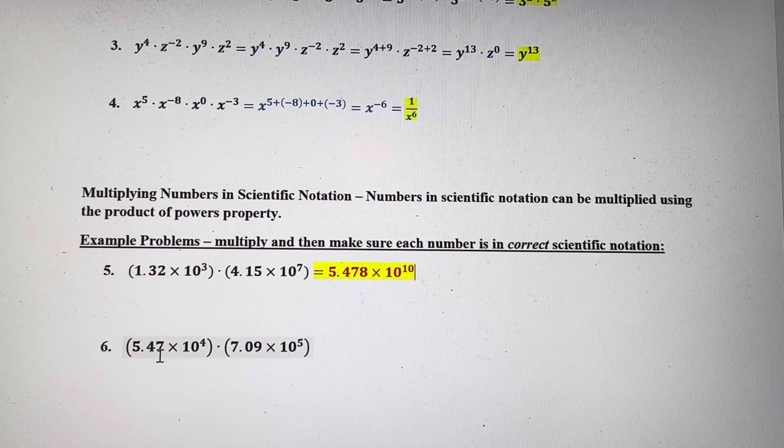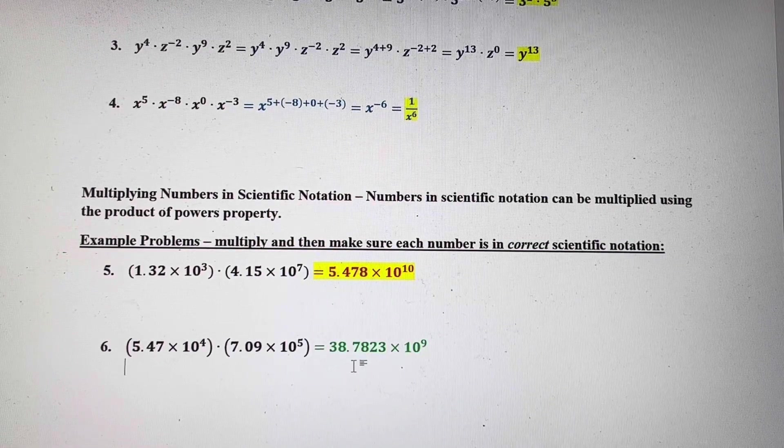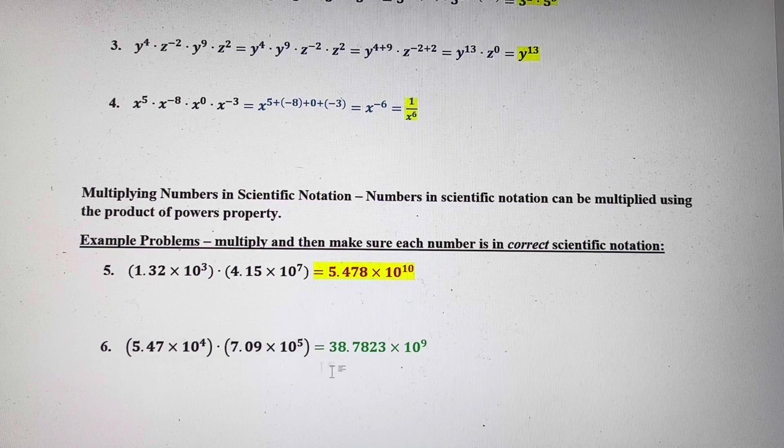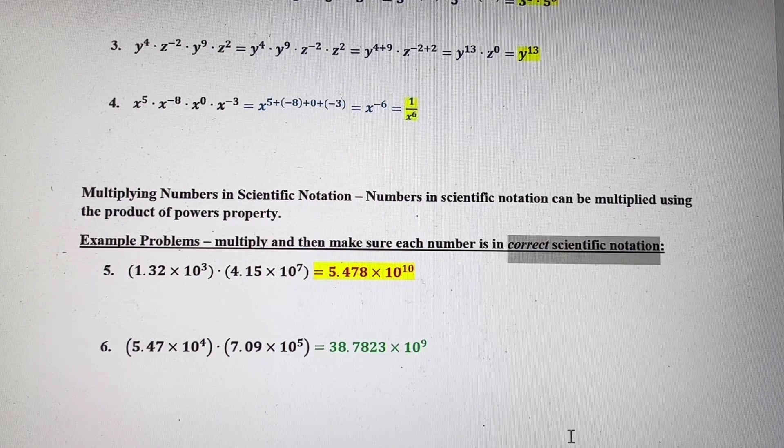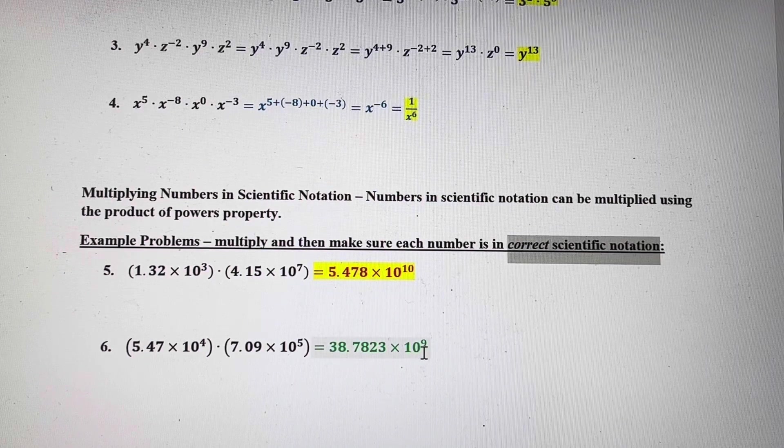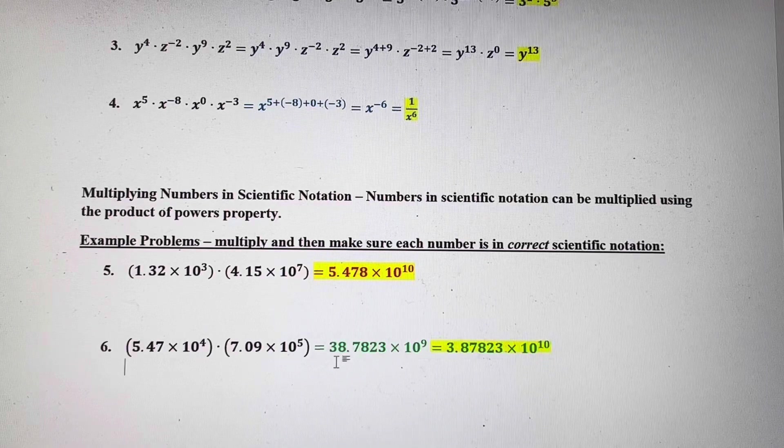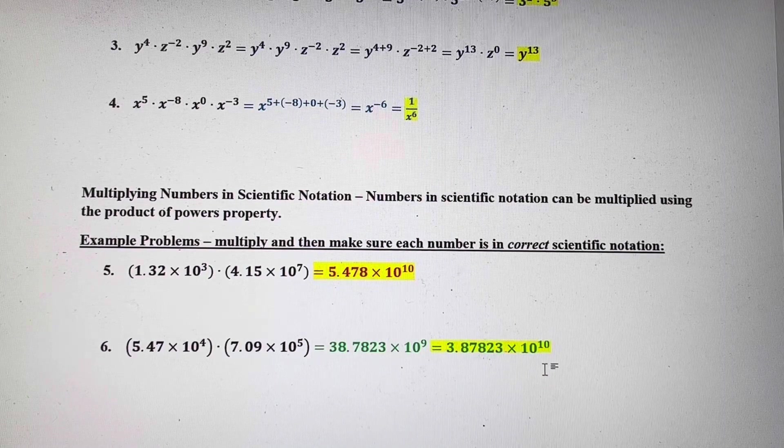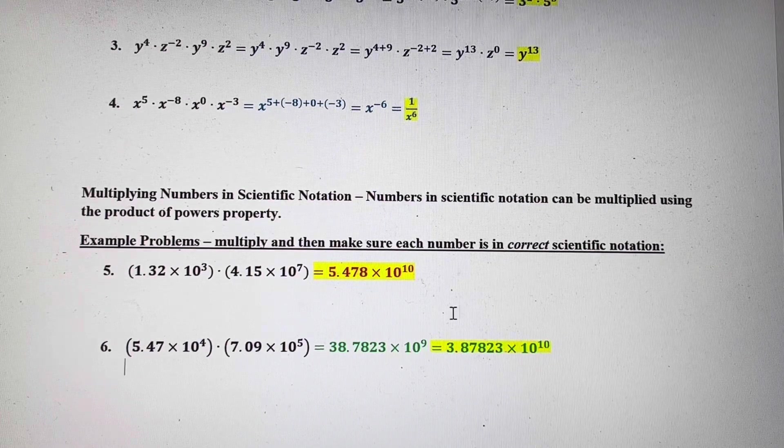In number 6, when I multiply the constants, 5.47 times 7.09, I get a number that's not between 1 and 10. I get 38.7823. I'm still going to add the exponents for the factors of the powers of 10 here, so that's going to be 10 to the 9th. But I have to convert this one more time into correct scientific notation. So I'm going to move this decimal one place to the left. When I do that, remember, it makes this exponent bigger by 1. So to write that in scientific notation correctly, I'm going to move the decimal again between the 3 and the 8, so I get 3.87823. I've got to raise the exponent by 1, so I get times 10 to the 10th. So that's how you use the product of powers property here when you're dealing with scientific notation.